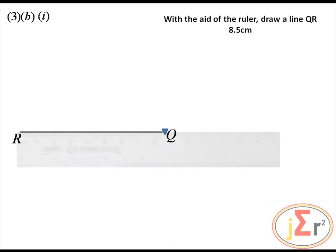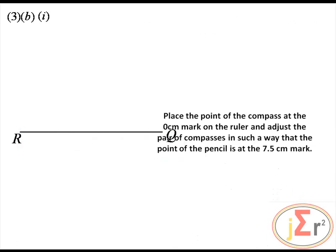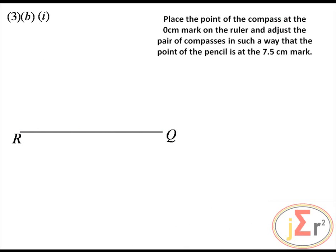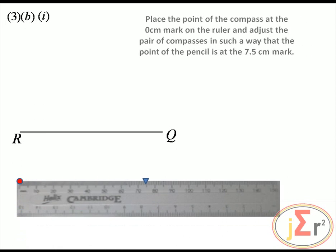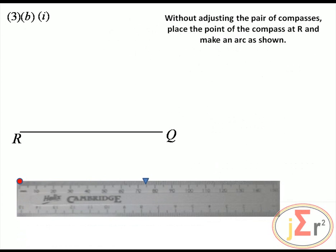Place the point of the compass at the 0 cm mark on the ruler and adjust so the pencil point is at 7.5 cm — this draws PR. Without adjusting the compasses, place the point at R and make an arc. That arc corresponds to the length PR from point R.